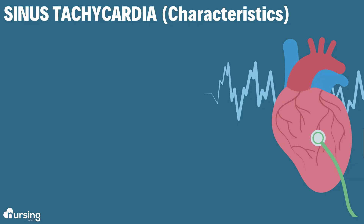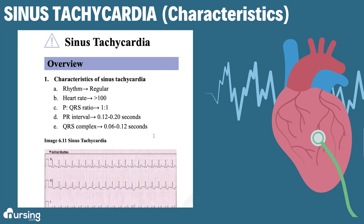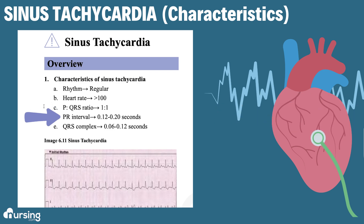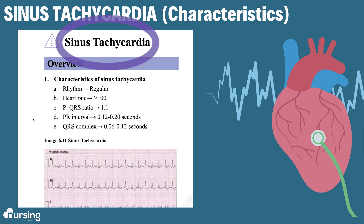Let's recap these characteristics. Our rhythm is a regular rhythm. Our heart rate is 110 to 115 beats per minute. Our P to QRS ratio is one to one. Our PR interval is normal. Our QRS complex is normal. So our rhythm is sinus tachycardia.